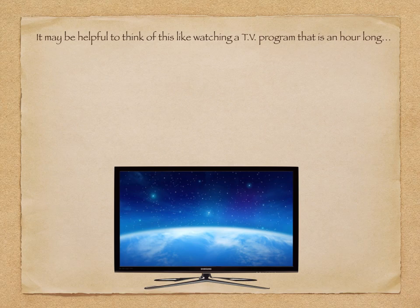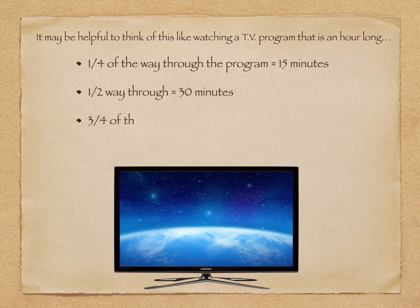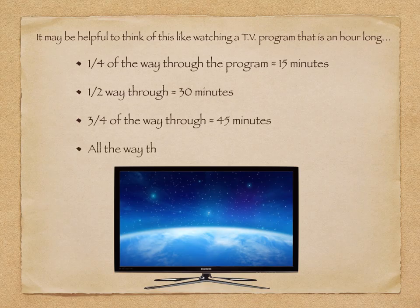So even though we're going to be discussing latitude and longitude and angular distances, it may be helpful to think of this minutes idea by watching a TV program that's an hour long. If we're a quarter of the way through that hour-long program, that means we're 15 minutes in, because a quarter of 60 minutes is 15. If we're halfway through the program, of course we're at the 30 minute mark. Three quarters of the way through is the 45 minute mark. And if we're all the way through the program, that means we've gotten the full 60 minutes.